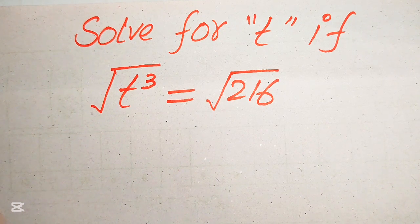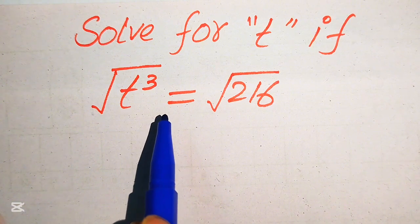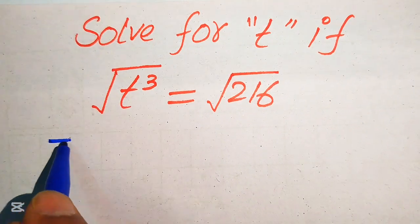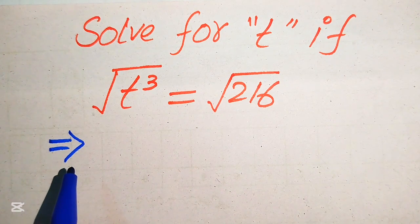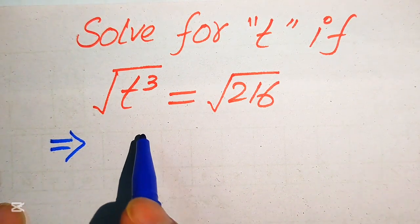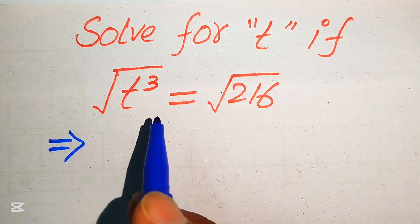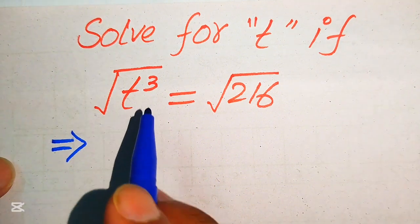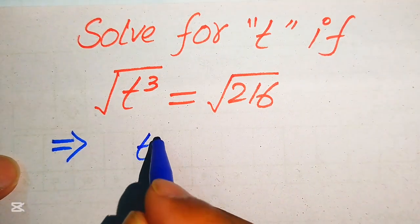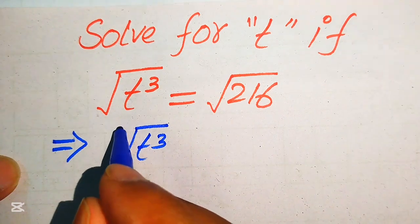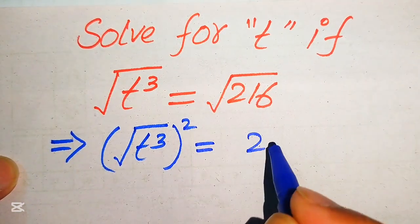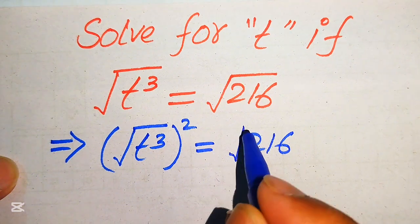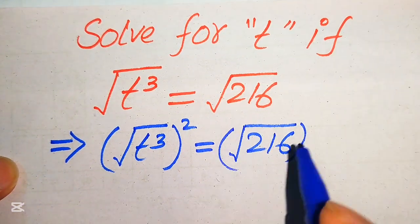In order to find the value of t, first we need to eliminate the square root on both sides. To eliminate it, we take the square on both sides, so we write the square root of t cubed, and its whole square equals 216 squared.